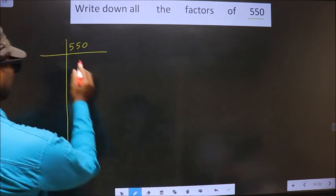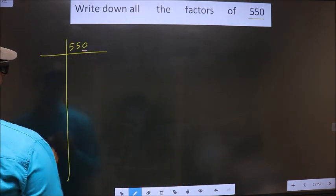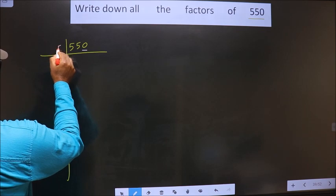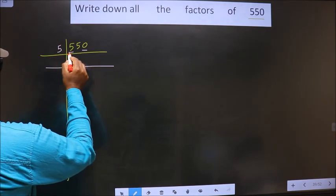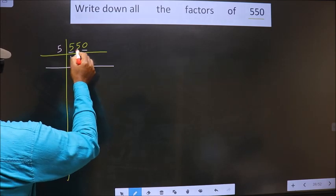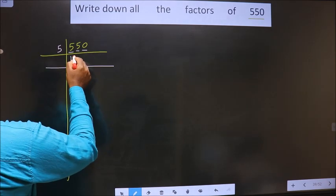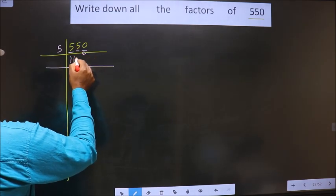Now, for this number, last digit is 0, so we take 5 here. First number is 5. When do we get 5 in 5 table? 5 once 5. Next number is 5, so again 1. This 0 as it is carried down.